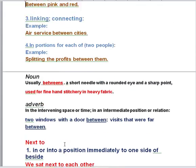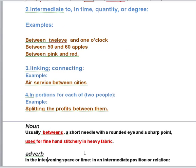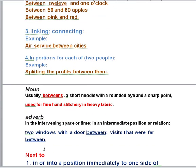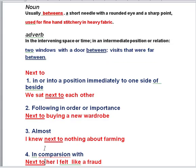To summarize: 'between' has four uses — one, in space separating two points; two, intermediate in time, quality, or degree; three, linking or connecting; four, in portions for each of two people. We can use 'between' with nouns. And 'next to' has four uses — one, in a position immediately to one side; two, following in order or importance; three, almost; four, in comparison with.